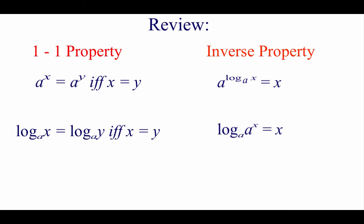A few properties I want to run through before we get into solving some actual equations. We've got a one-to-one property that works for both exponential equations and logarithmic equations. Our exponential one-to-one property says if we have the same base on an exponential on the left and right hand side of our equation, then we can just ignore those bases of A and focus on those powers. Same thing happens if we're looking at a logarithm base A — if we've got the same logarithm on both sides, just ignore those logarithms and look at those x and y values.